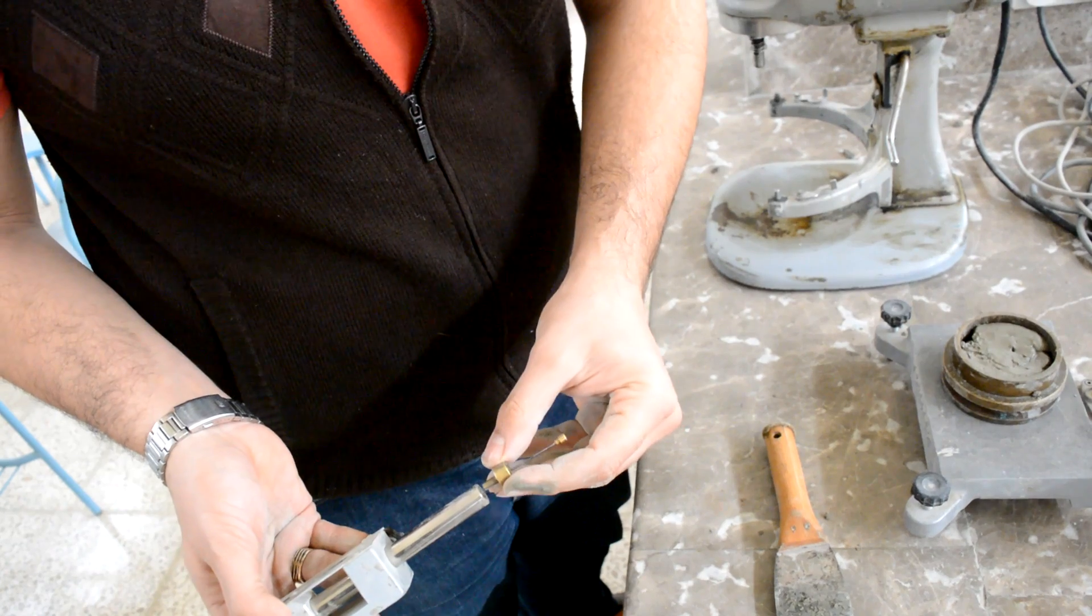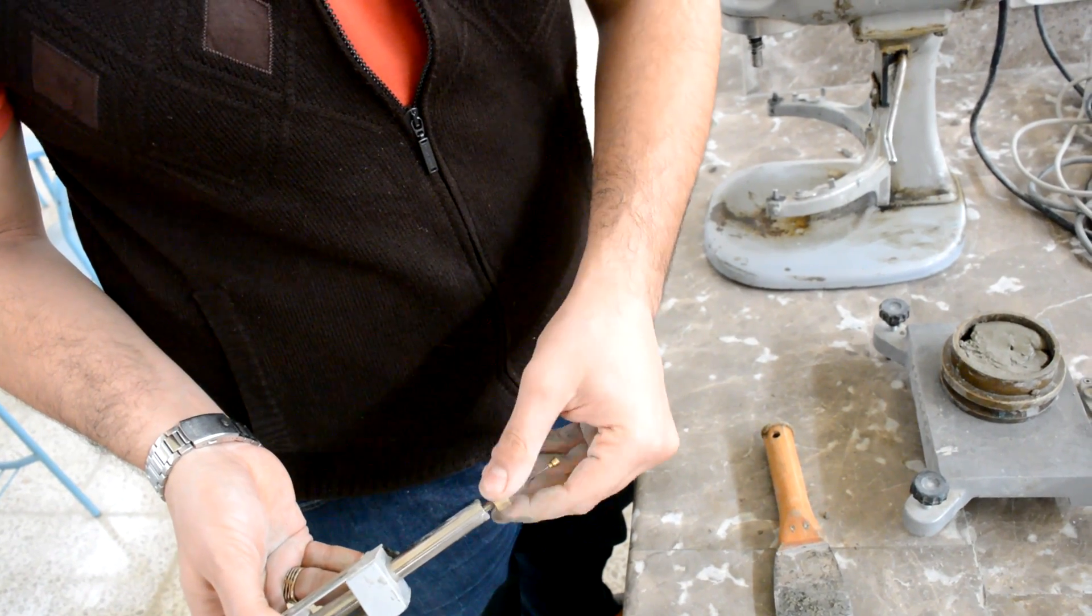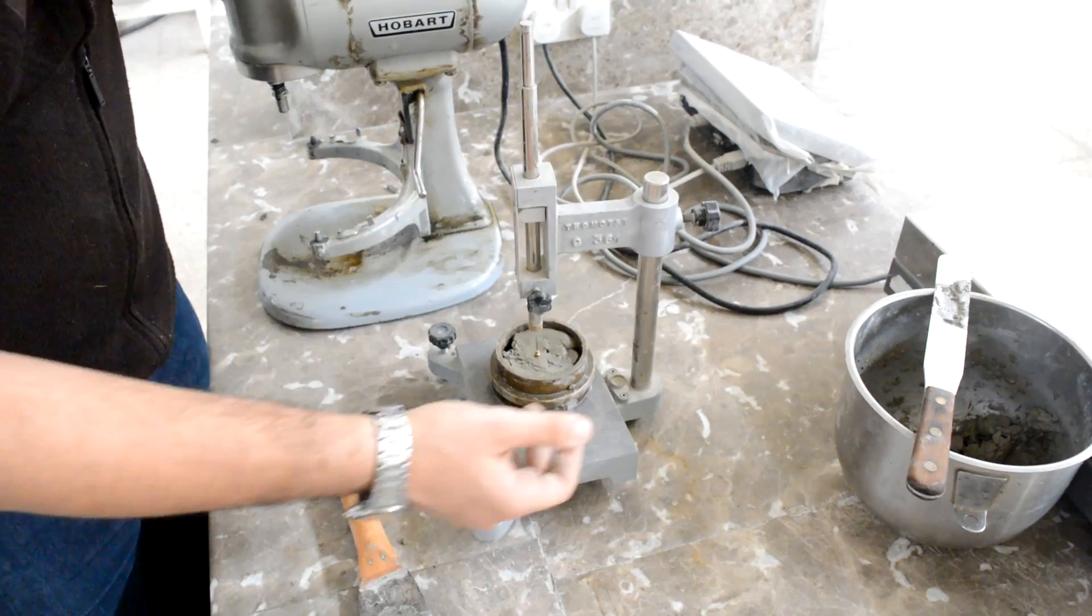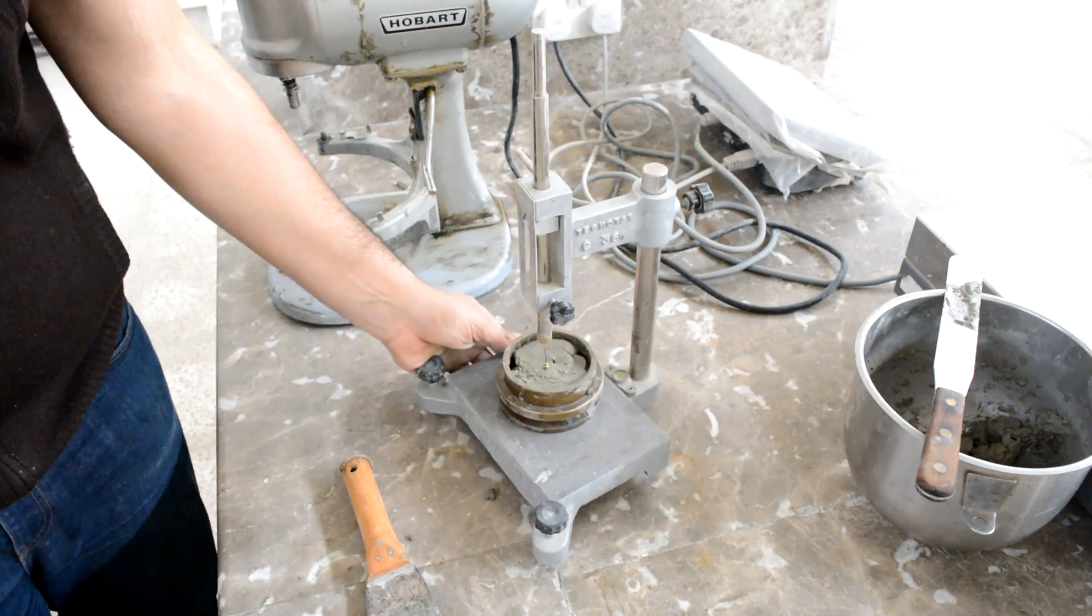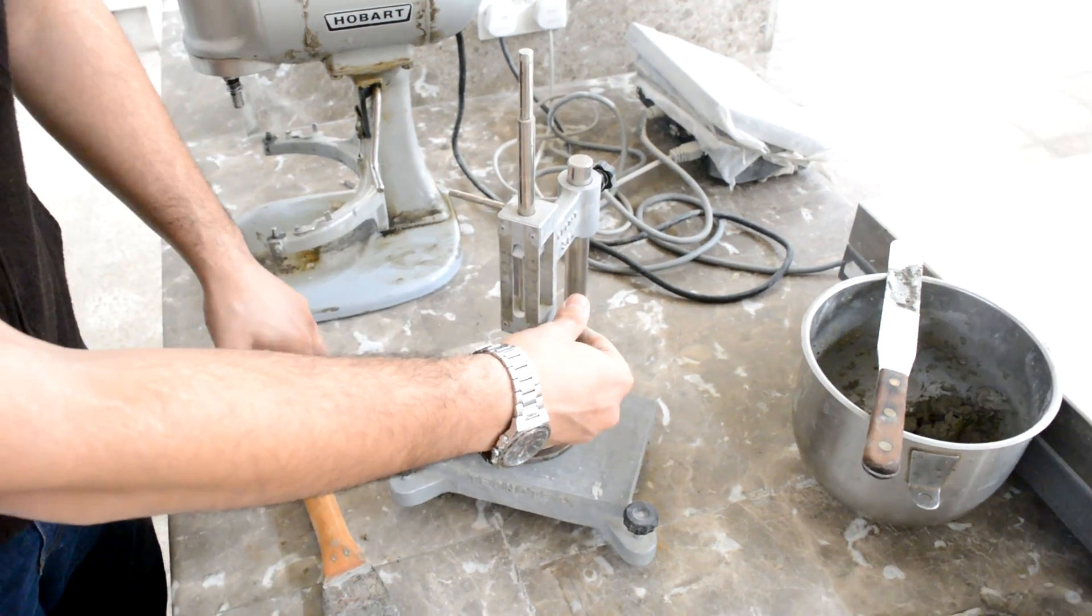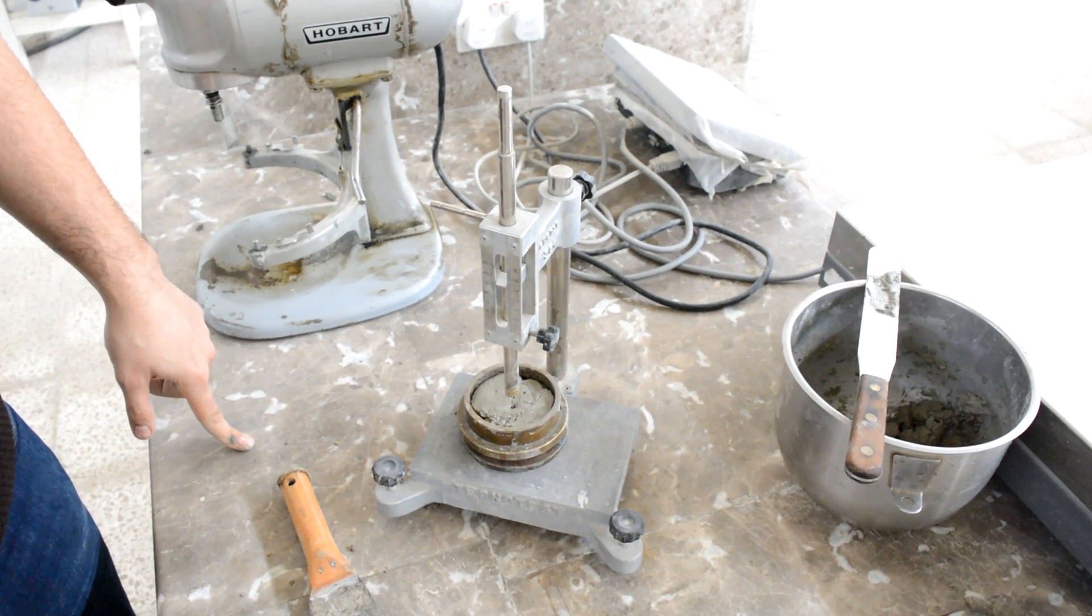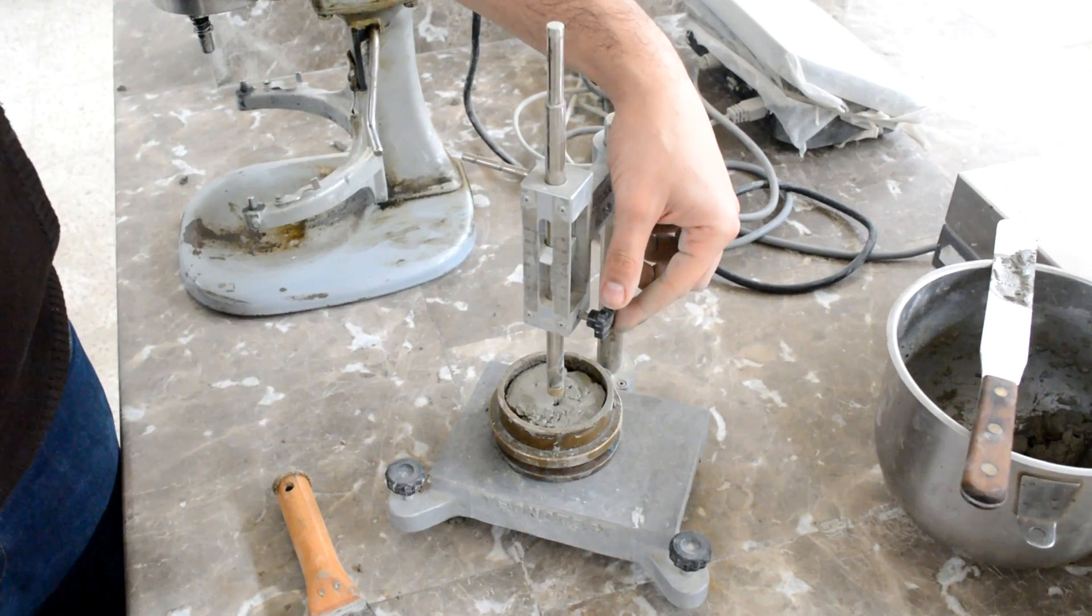Then place the thick needle on the Vicat apparatus and set the indicator to zero. Adjust the needle until it becomes in contact with the paste surface. Release the needle; the needle will penetrate the paste. Repeat this operation every 15 minutes.